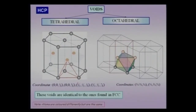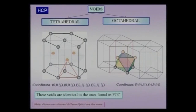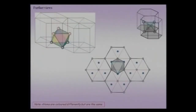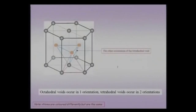We will use models to understand where the tetrahedral and octahedral voids are located. In the hexagonal close-packed crystal it is difficult to visualize especially the octahedral void. The packing direction is the 0001 direction of the HCP crystal — the direction of packing of the close-packed planes in an ABAB fashion. The difficulty in visualizing the octahedral void comes from the fact that it sits not within a single unit cell but within multiple unit cells — it is shared between three unit cells.